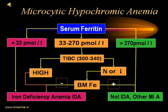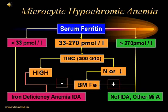If serum ferritin is more than 270 picomoles per liter, it is not iron deficiency anemia — it means other causes of microcytic anemia must be looked into. Supposing a patient has microcytic hypochromic anemia with serum ferritin greater than 270 picomoles per liter, it could be due to sideroblastic anemia, hemoglobinopathy, chronic infections, and things like that.